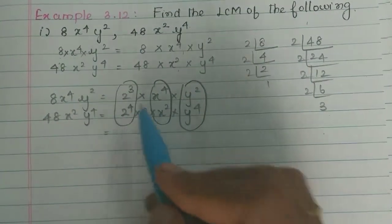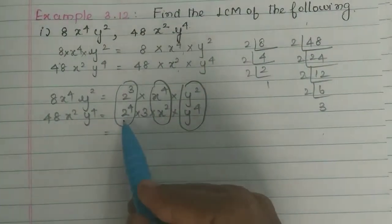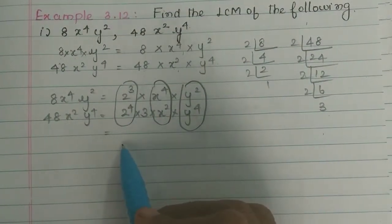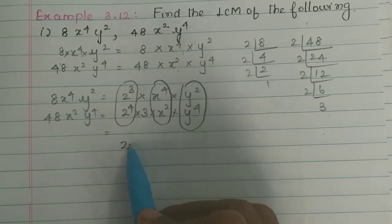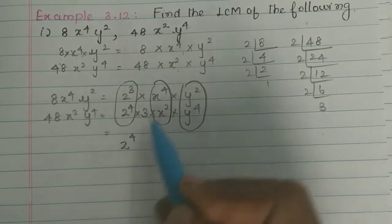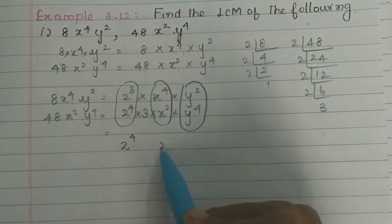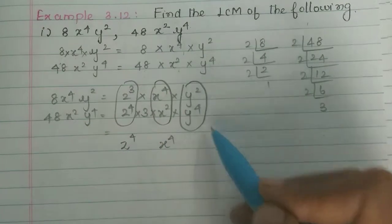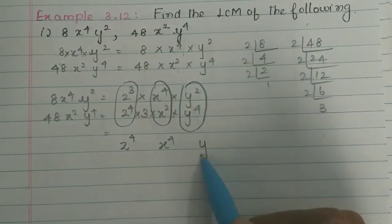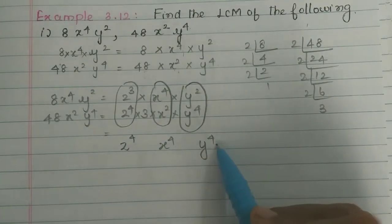So what powers do we need? We need 2 to the power 4. Then, what powers do we need for x? x to the power 4. Then, what powers do we need for y? y to the power 4.